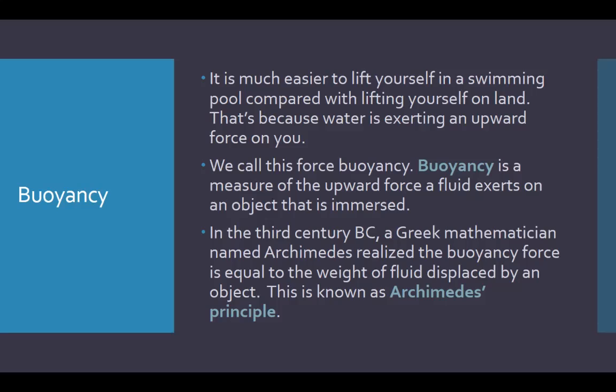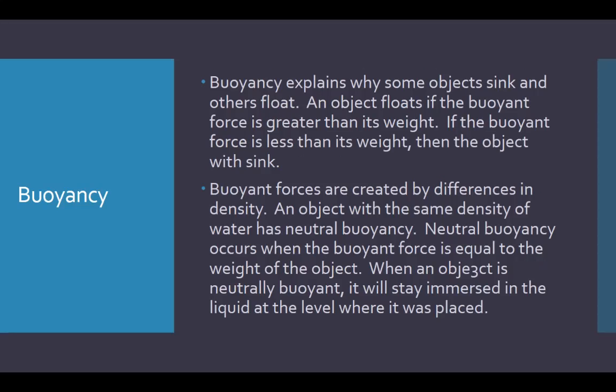In the third century BC, a Greek mathematician named Archimedes realized that the buoyant force is equal to the weight of fluid displaced by an object. This is known as Archimedes' principle. Buoyancy explains why some objects sink and others float. An object floats if the buoyant force is greater than its weight; if the buoyant force is less than its weight, the object will sink. Buoyant forces are created by differences in density. An object with the same density as water has neutral buoyancy and will stay immersed at the level where it was placed.